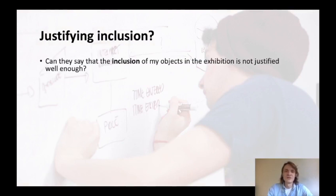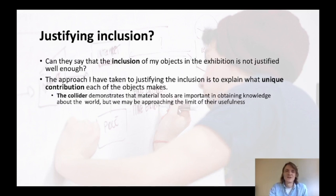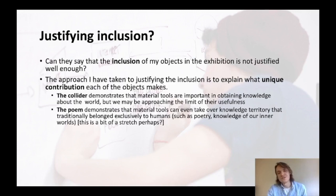How do I justify the inclusion? The approach I've taken is to explain what unique contribution each object makes, using the language of the TOK exhibition assessment instrument. The Collider demonstrates that material tools are important in obtaining knowledge about the world, but also demonstrates that we may be approaching the limits of their usefulness. The poem demonstrates that material tools can even take over knowledge territory that traditionally belonged exclusively to humans — such as poetry, knowledge of our own inner world.